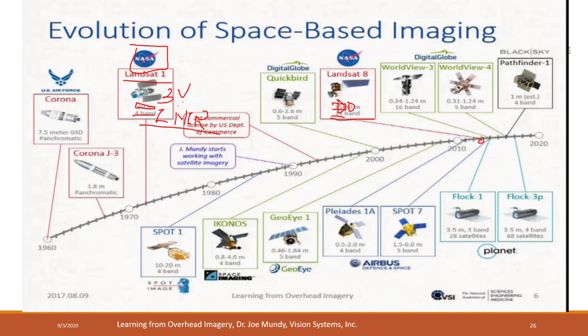Some satellite images now have less than one meter spatial resolution, which is very high. Some satellites have many bands — for example, 16 bands. The general trend is toward higher spatial resolution, more spectral bands, and higher radiometric resolution. For temporal resolution, it really depends on the purpose of the satellite — some have very high temporal resolution and others have very low temporal resolution.